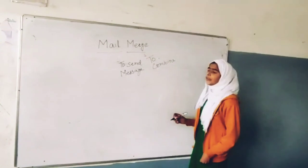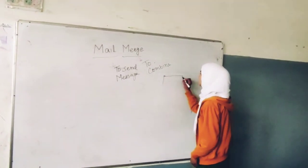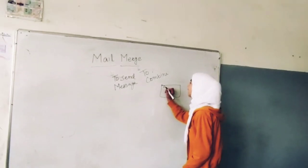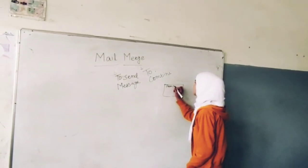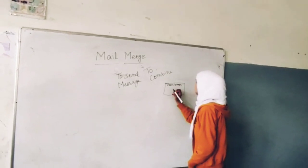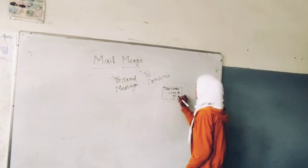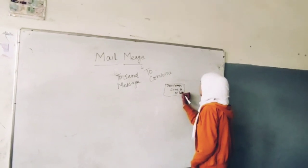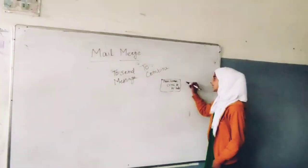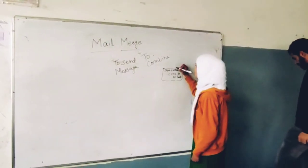So first of all, what we have to do in this process is make our main document. For example, I write here: 'Dear friends, come to my party.' It will be saved for everyone whom I have sent this message. So this is my main document.